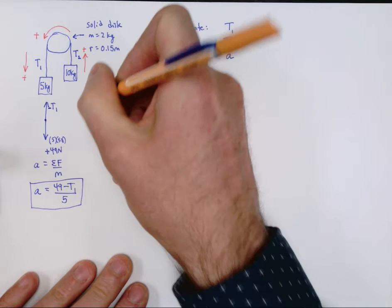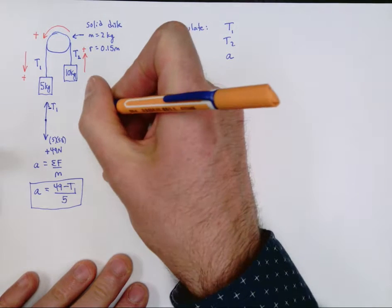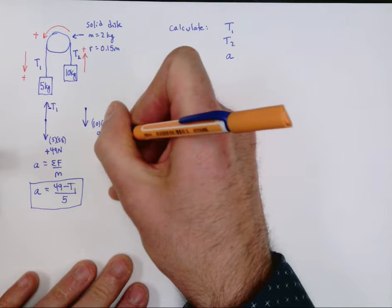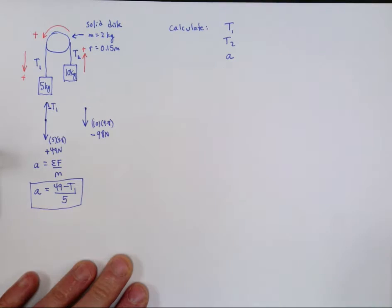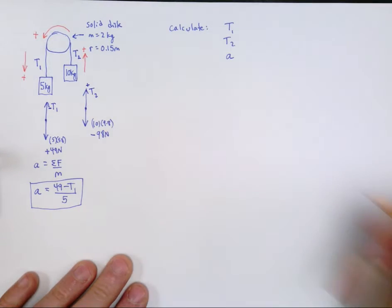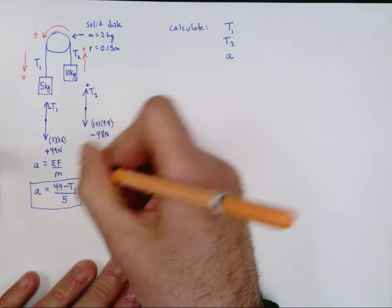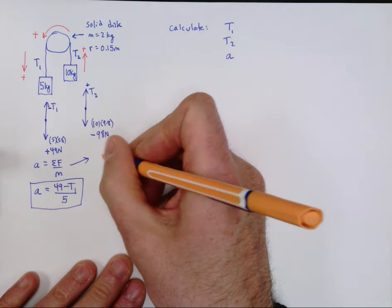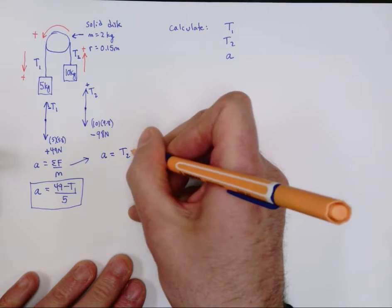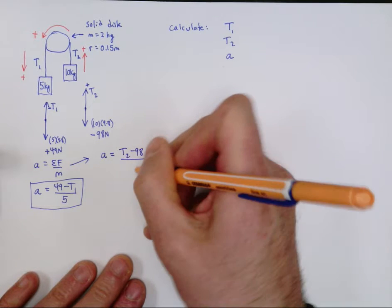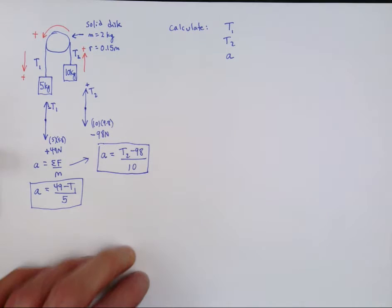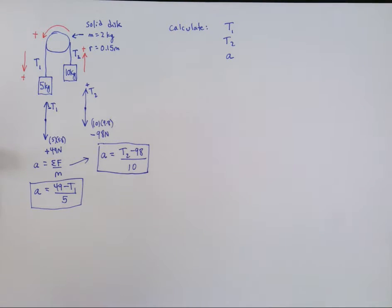The second equation comes from the free body diagram of the 10 kg mass. Its weight is 10 times 9.8 equals 98 newtons — negative on that side, since down is negative. T2 pulls up and is positive. The acceleration equation gives us: acceleration equals (T2 minus 98) divided by 10. That is the second equation.